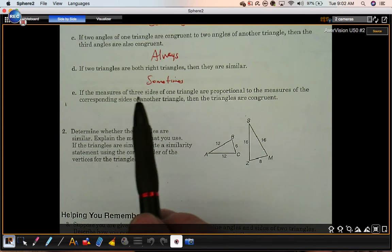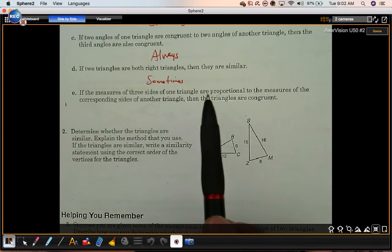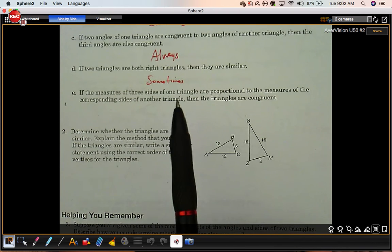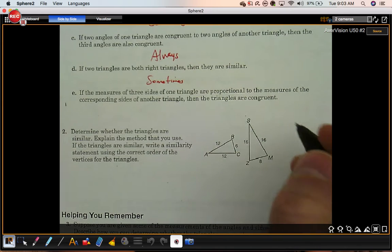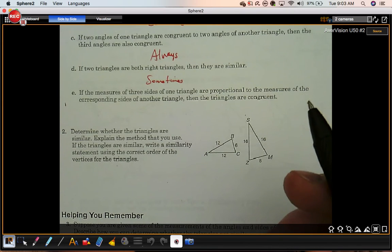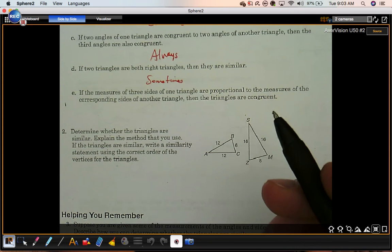Part E. If the measures of three sides of one triangle are proportional to the measures of the corresponding sides of another triangle, then the triangles are congruent. Well, they're definitely similar. Does it mean that they're congruent? Not necessarily.